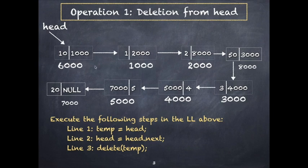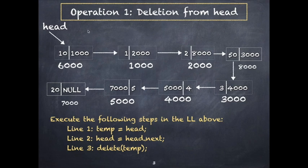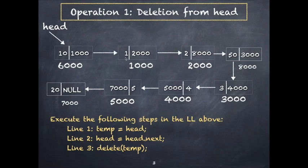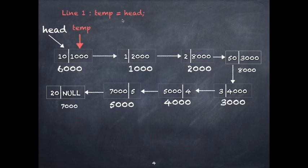To preserve the head pointer, we use a temporary pointer. First, assign temp equal to head. Then move head to head's next node — because after deleting the first node, the second node becomes the new first node. So head should point to that new first node, which contains data value 1. Then delete temp. After step one, temp and head both point to the node at address 6000.